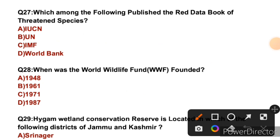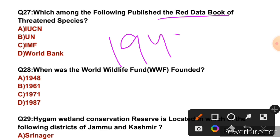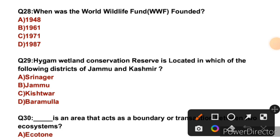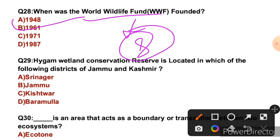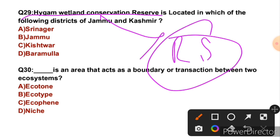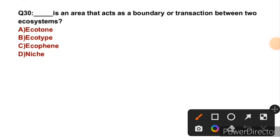Question 26 covers biosphere reserves. Question 27: Which among the following published the Red Data Book of threatened species? That is IUCN — the International Union for Conservation of Nature, which was formed in 1948. So the right answer is A. Question 28: When was the World Wildlife Fund founded? The WWF was founded in 1961. So the right answer is B. Its headquarters is in Switzerland. Question 29: Highground Wetland Conservation Reserve is located in which district of Jammu and Kashmir? It is a Ramsar site. It is located in Banhal district. So the right answer is B.